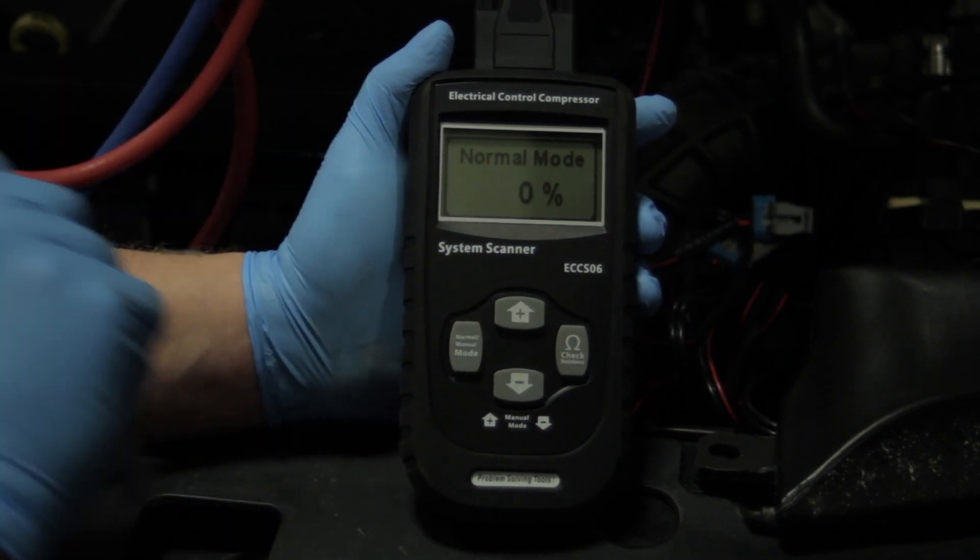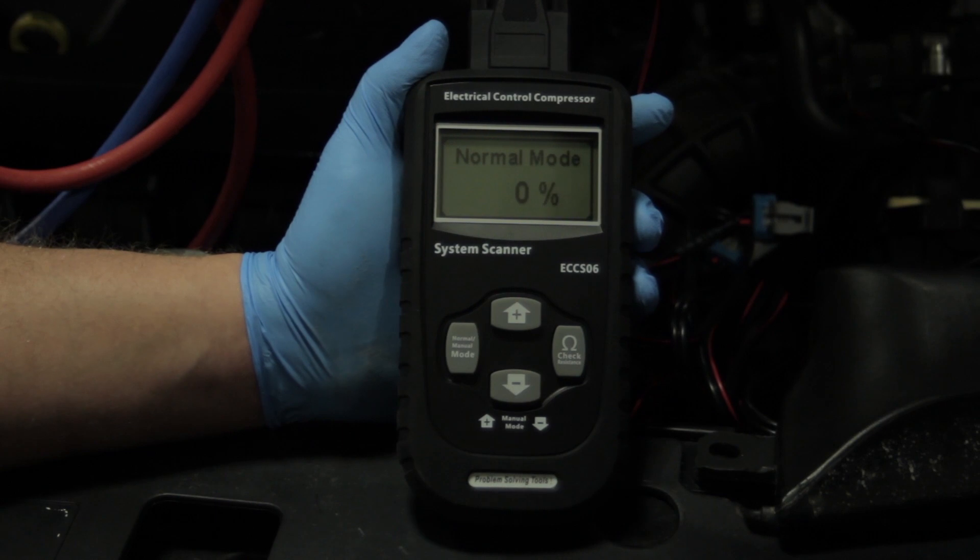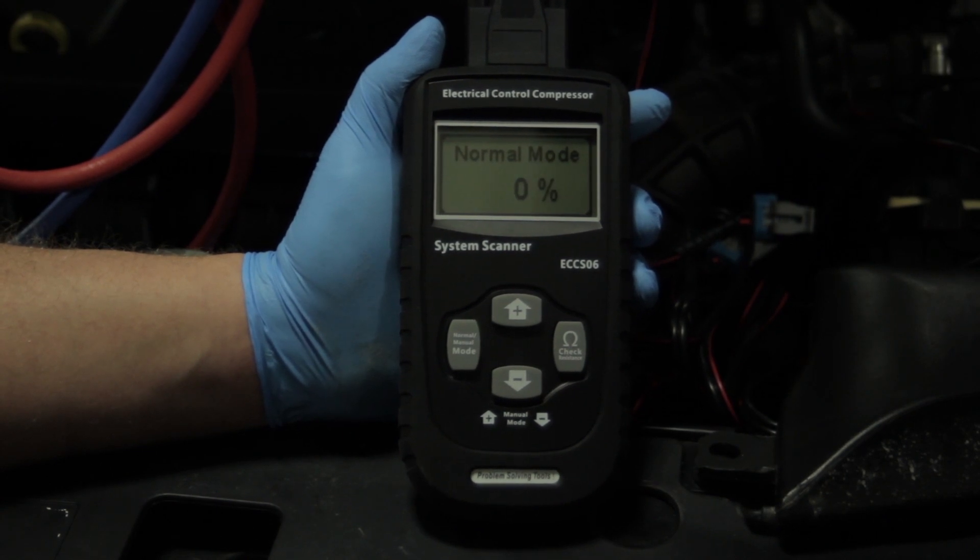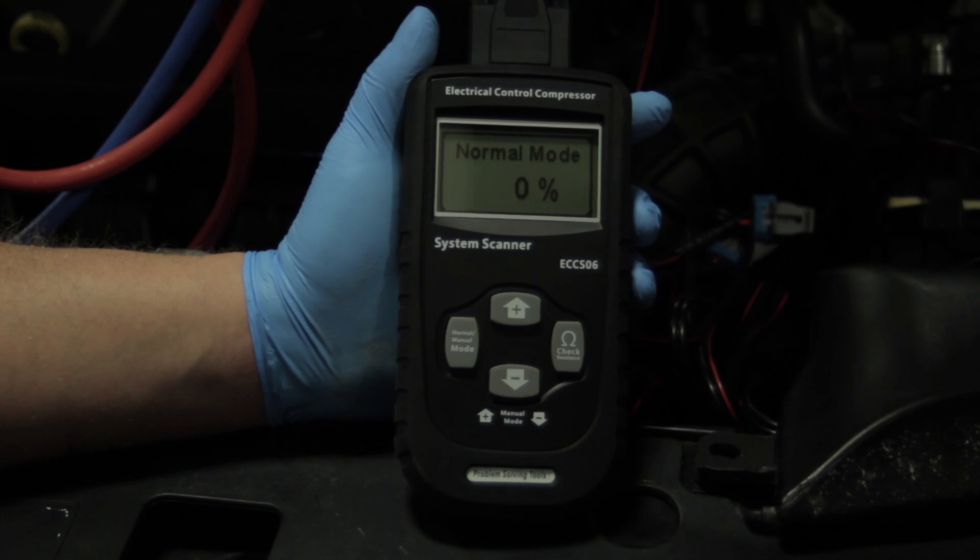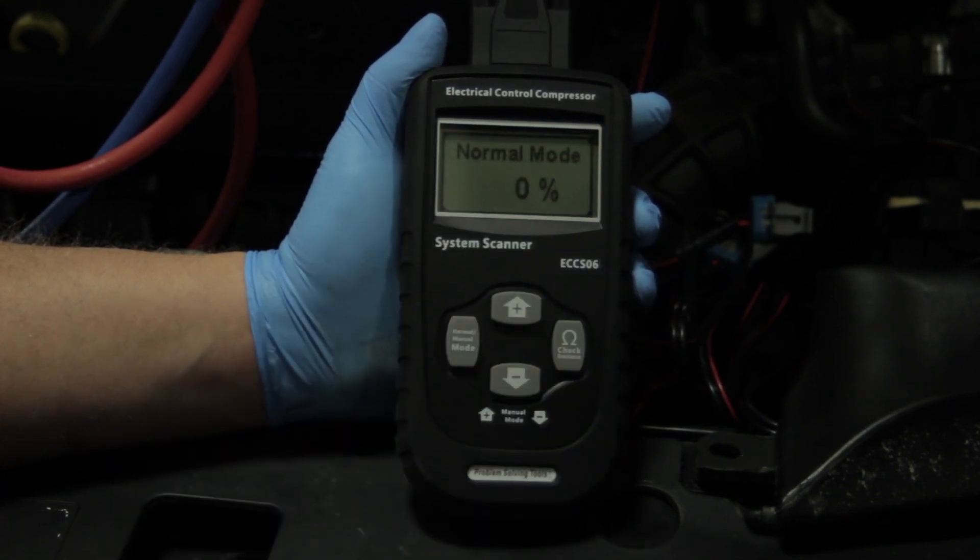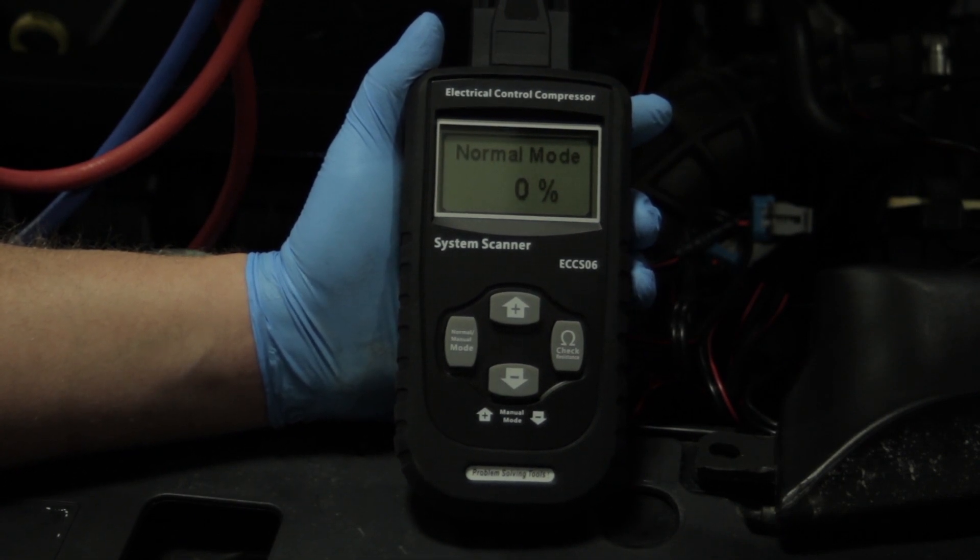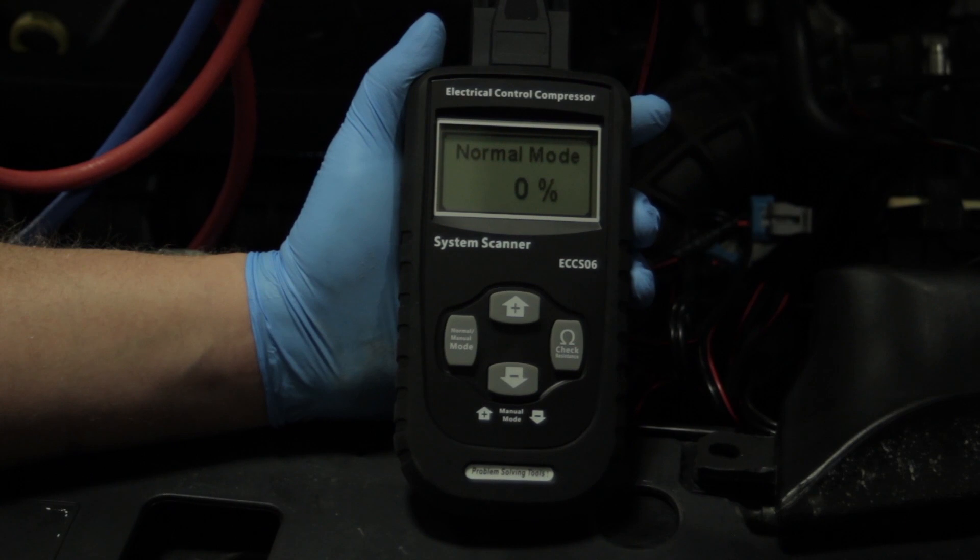And I've got my AC pressure gauges hooked up, and we're going to see if the pressures correlate with the commands on the compressor here. If nothing changes as we command it, that lets us know that we've got a faulty compressor. Or if we do our resistance check, and we find that it's an open circuit, well that lets us know that we've got a faulty solenoid, or a faulty compressor as well. And we're going to monitor what the ECM is commanding to determine if it's sending the correct signals.